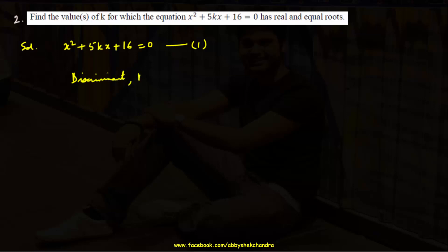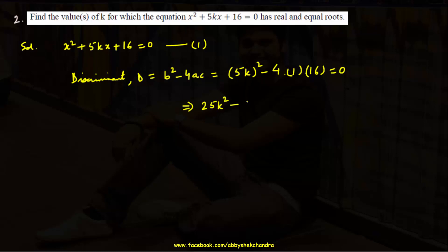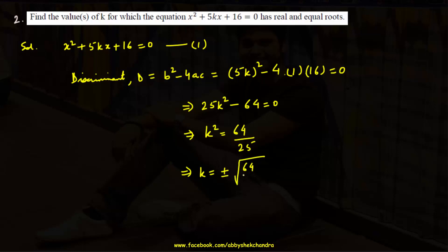Discriminant D = b² − 4ac = (5K)² − 4(1)(16) = 25K² − 64 = 0. So K² = 64/25, which gives K = ±8/5. There are two values: K = +8/5 and K = −8/5. Many students forget the ± sign, so be sure to include it. The question hints at multiple values by saying 'value or values'.